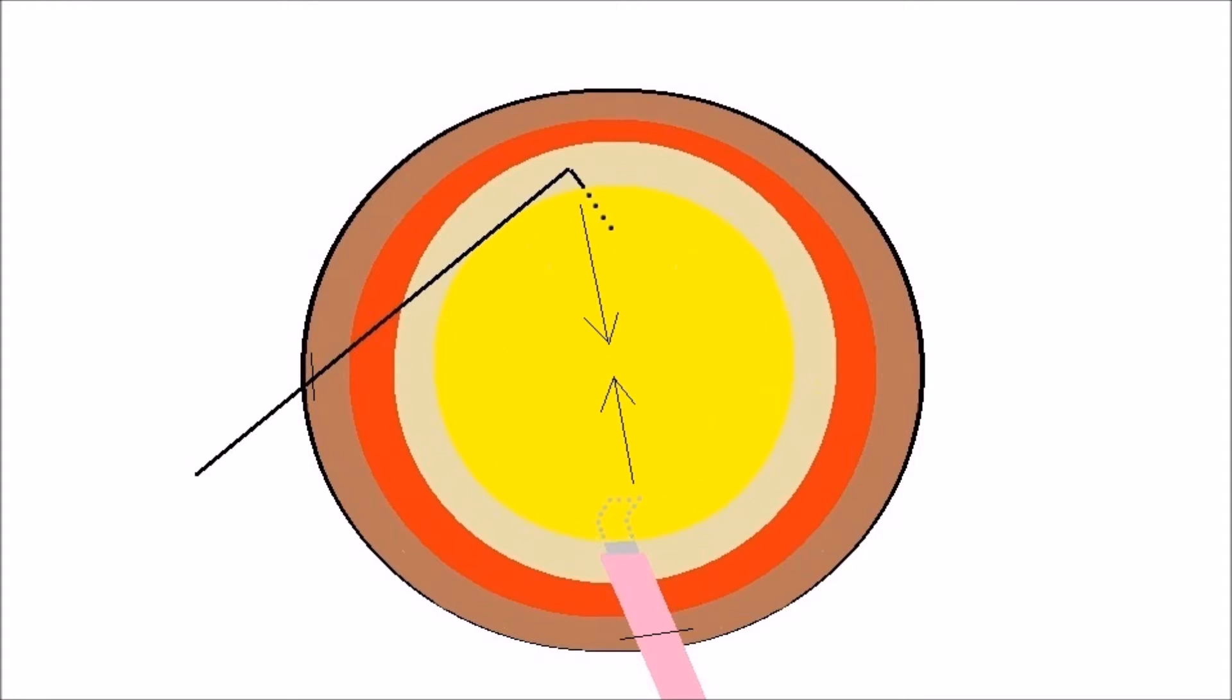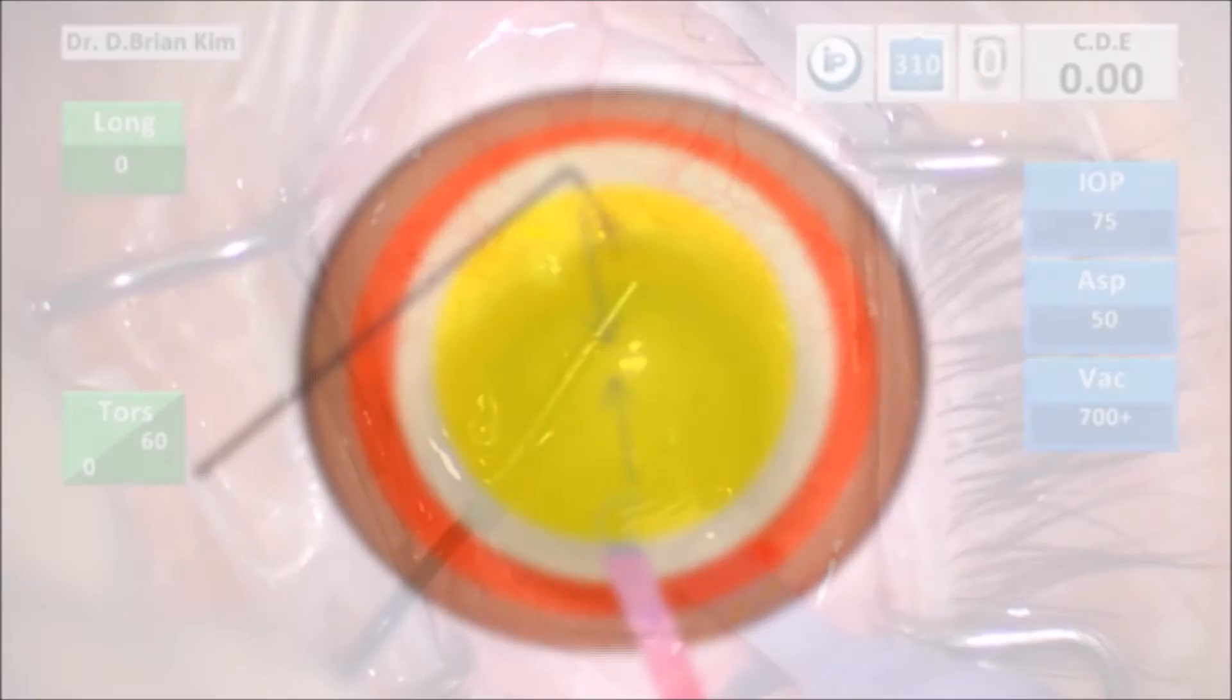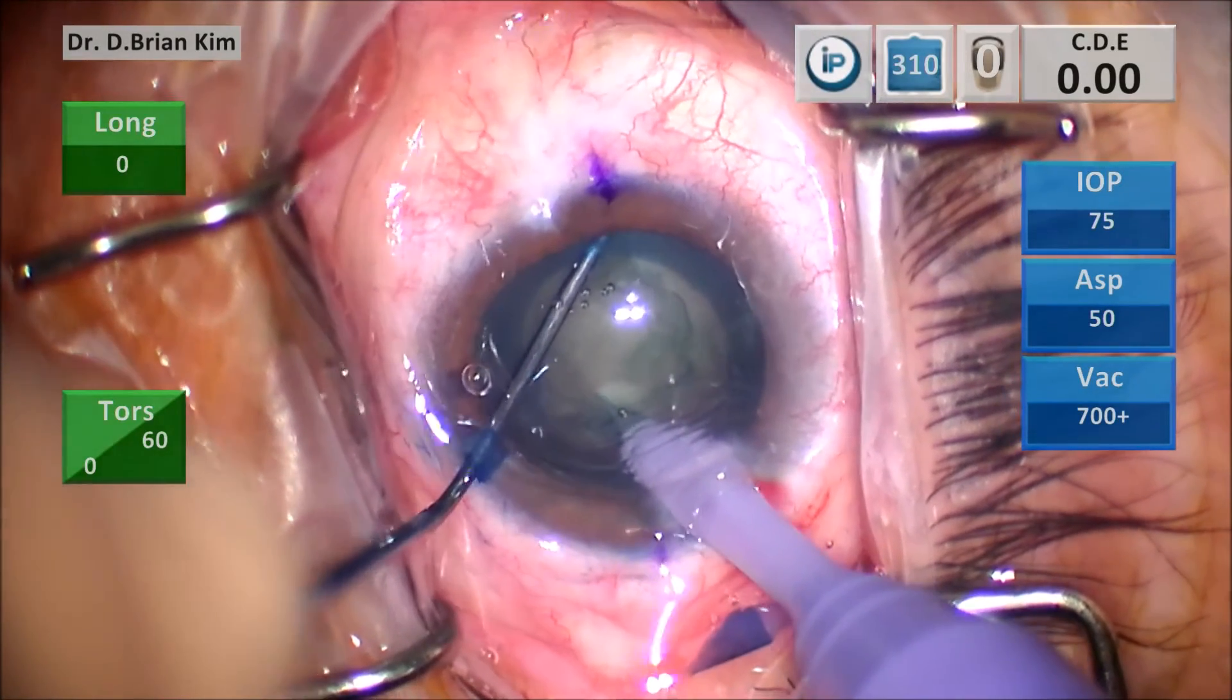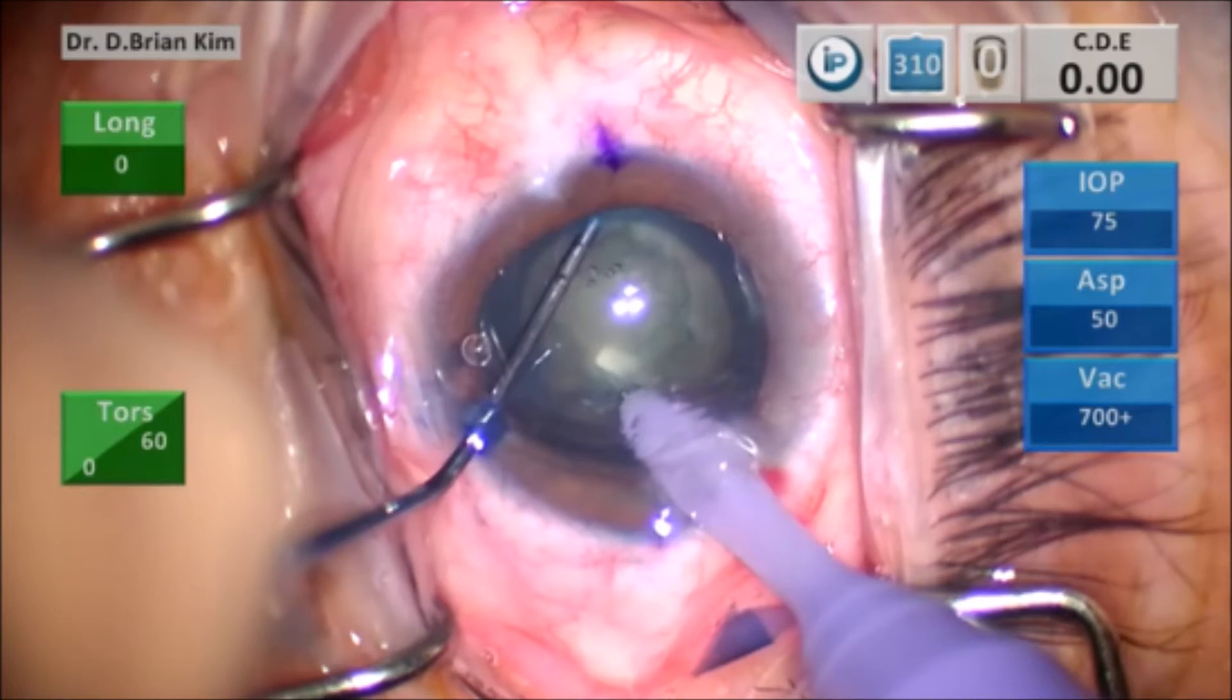Please appreciate there's no tilting or torsioning of the lens while I do this maneuver. I'm holding that lens on either side by the chopper and the phaco tip, and as I bring both instruments to the middle, you'll see the whitening of the lens fibers just anterior to